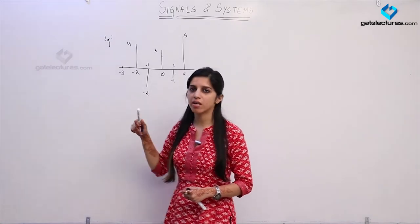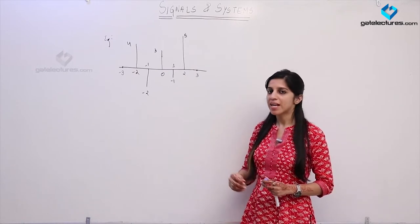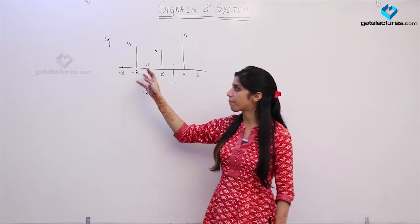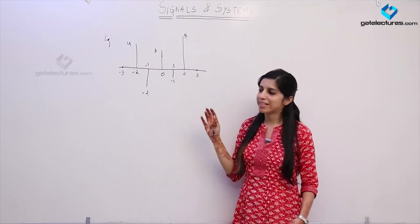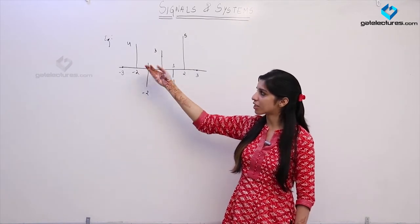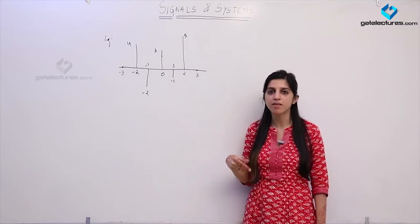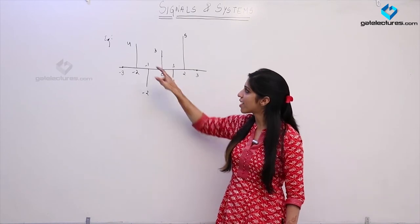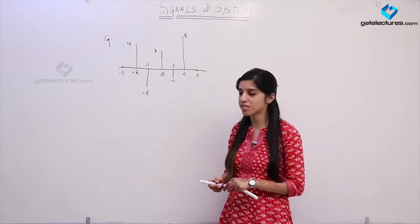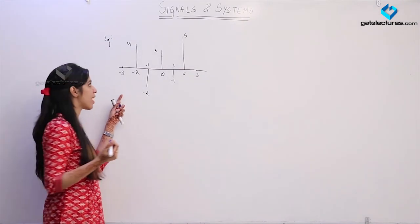Just as in continuous time any signal consisting of steps can be described as a sum of shifted step signals, any discrete time signal can be expressed either as a sum of shifted impulse signals — by writing the sample values at the points where they occur — or as a sum of shifted step signals, where the coefficient of each step signal represents the change in value, not the value itself.